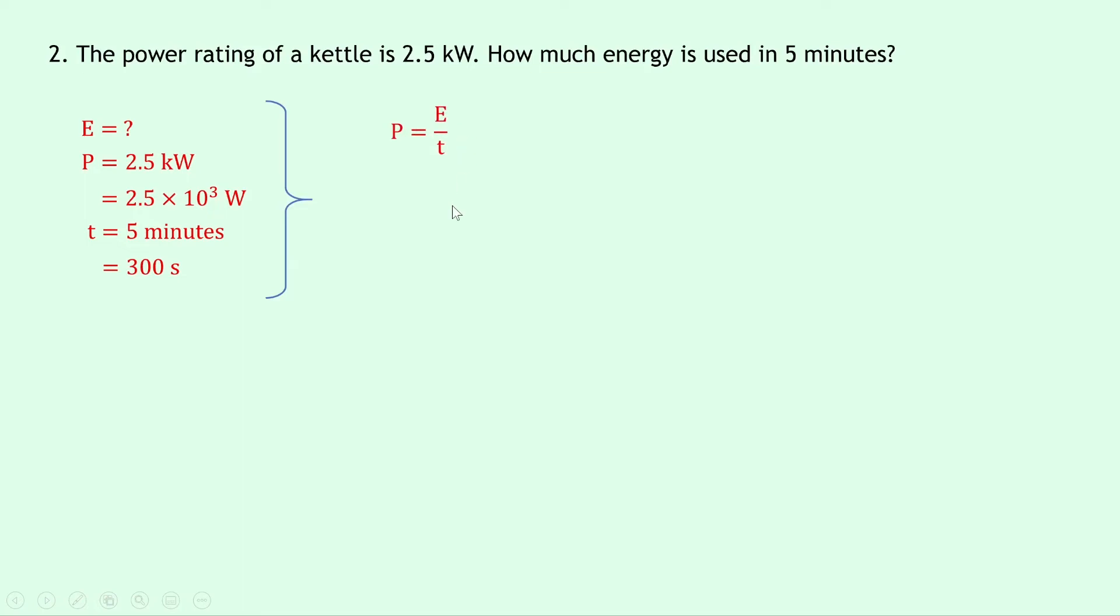Writing down our equation, we have p equals e over t, and rearranging for energy e, we can multiply both of these together to get p times t, so e equals pt, and substituting in the numbers, we get 2.5 times 10 to the 3 times 300, and putting this into your calculator gives a final answer of 7.5 times 10 to the 5 joules.